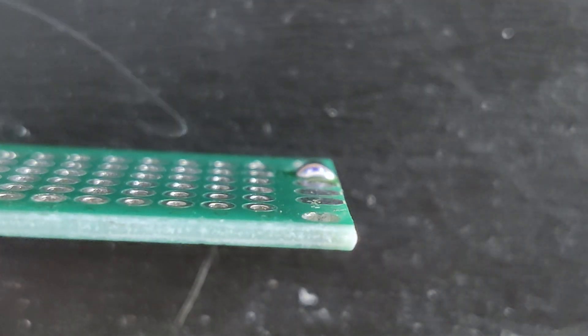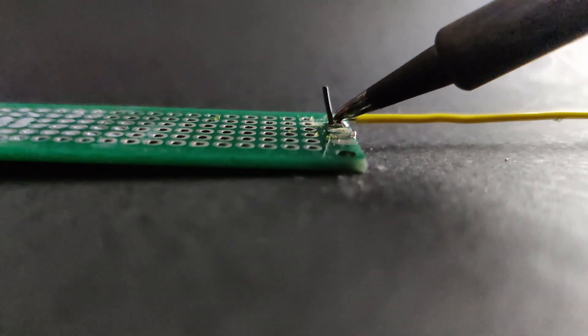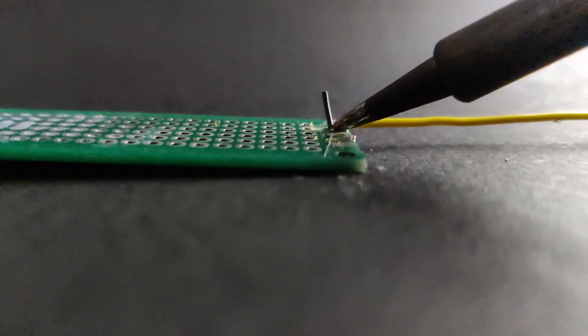And now watch the feed in slow motion as I solder a wire to the pad. You can see how the solder gets sucked into the joint.